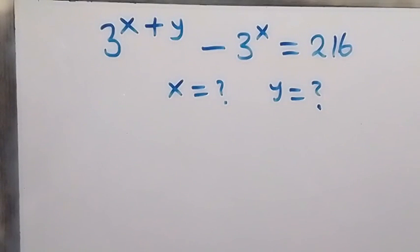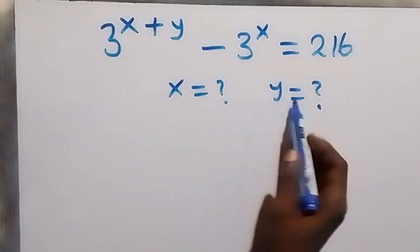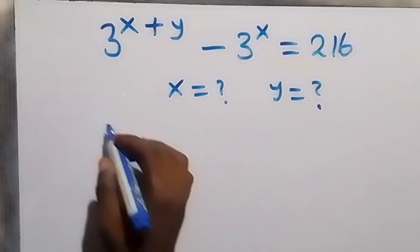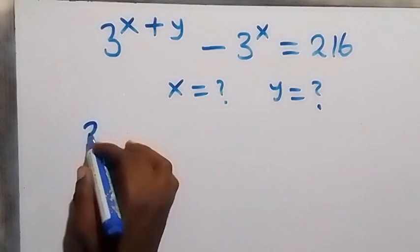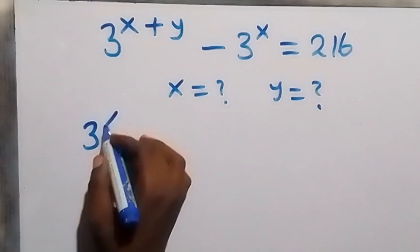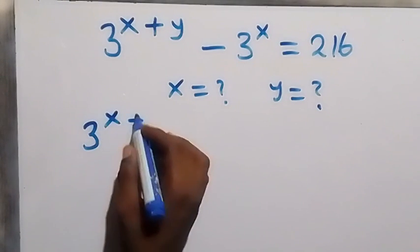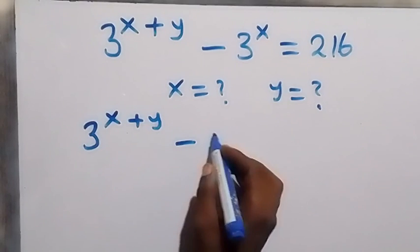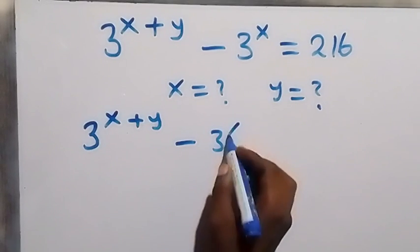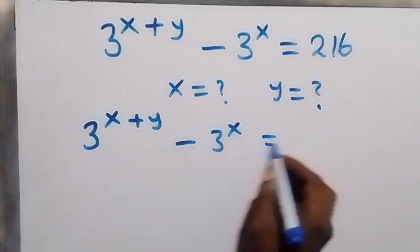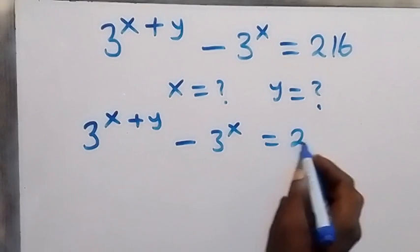Hello, you're welcome here. Let's solve this nice algebra exponent equation whereby we are finding x and y. We are given: 3 raised to power (x + y) minus 3 raised to power x equals 216.